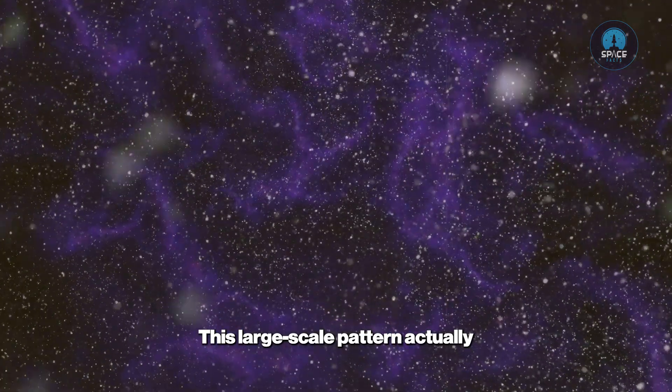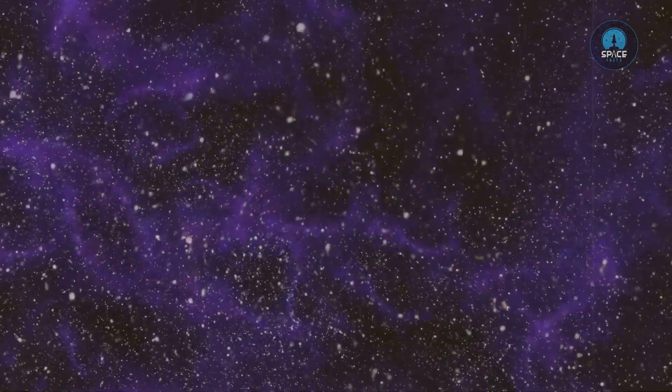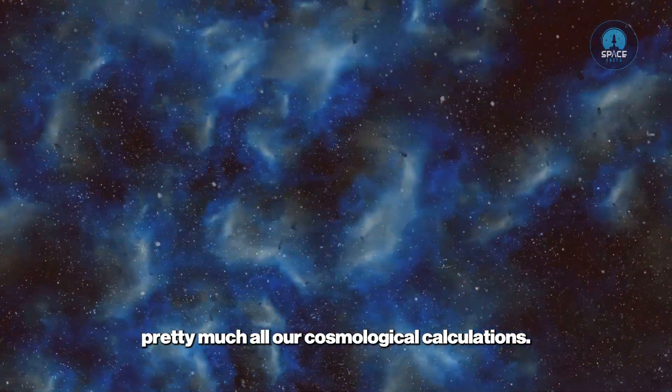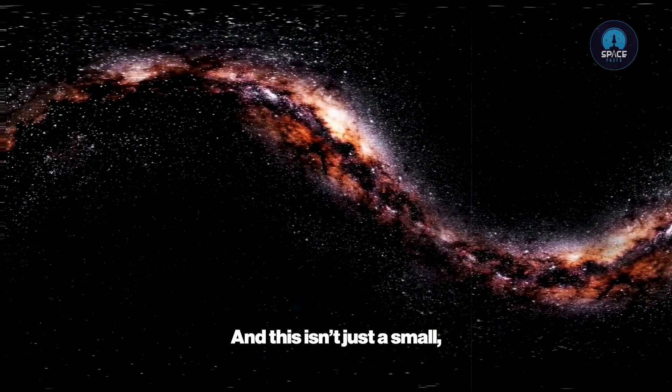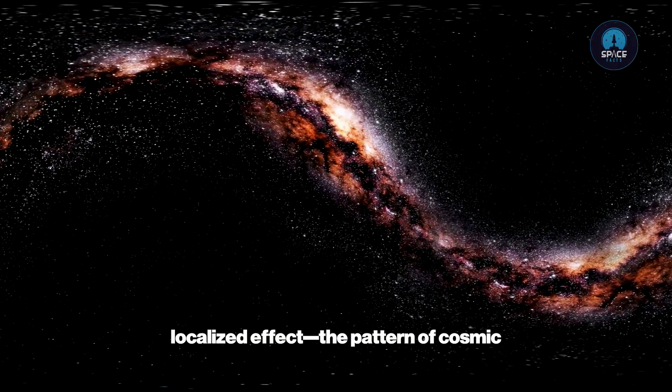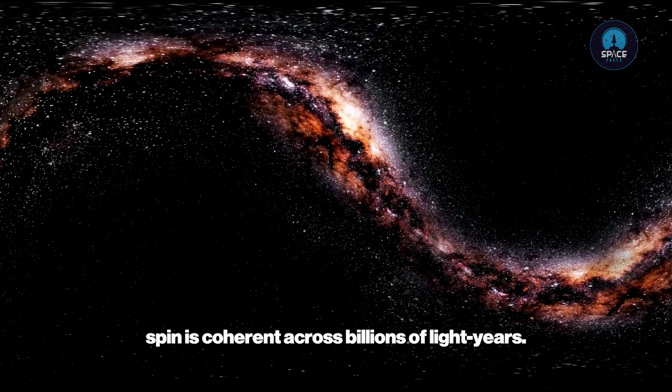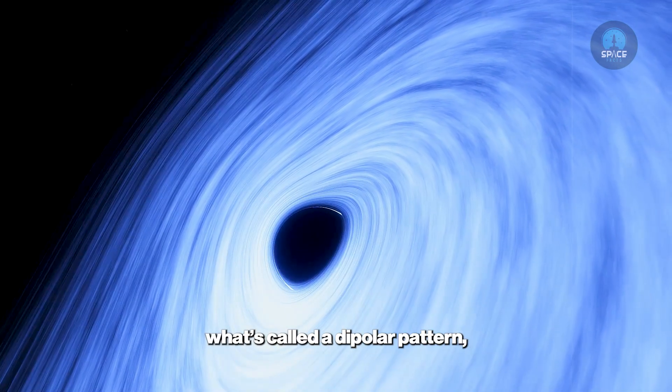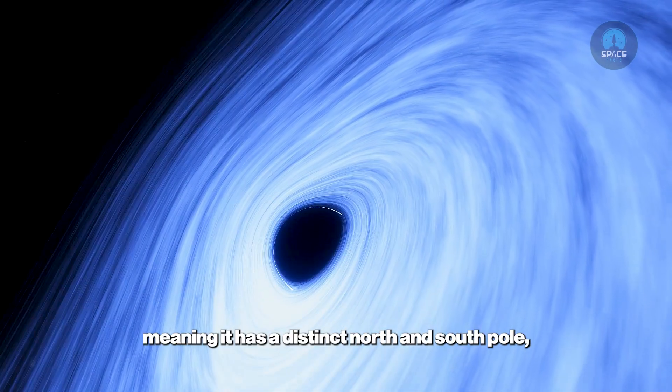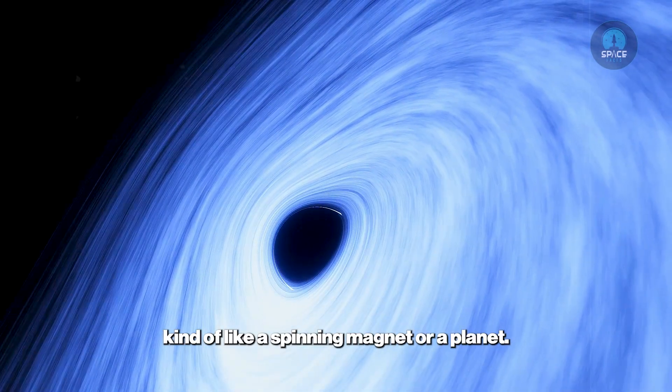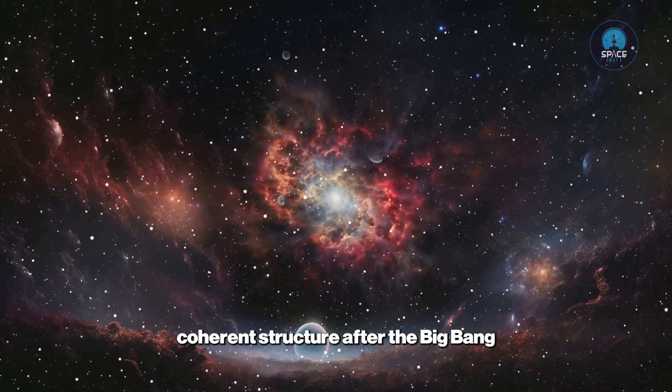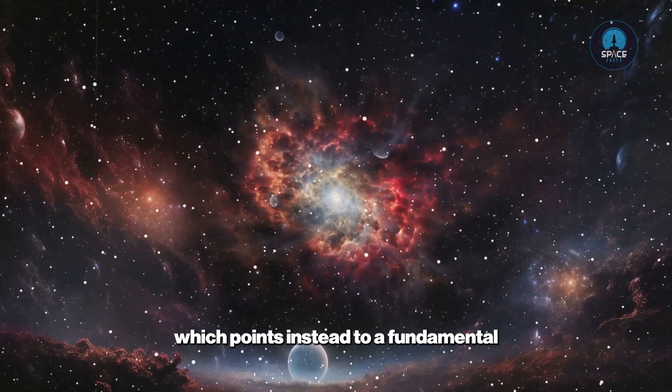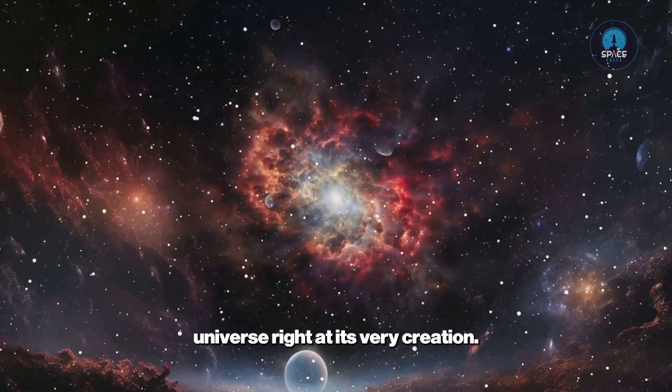This large-scale pattern actually challenges the long-held assumption that the universe is the same in all directions, which is a principle that underpins pretty much all our cosmological calculations. And this isn't just a small localized effect. The pattern of cosmic spin is coherent across billions of light years. Shamir's analysis shows that the distribution of spin directions fits what's called a dipolar pattern, meaning it has a distinct north and south pole, kind of like a spinning magnet or a planet. Creating such a large-scale coherent structure after the Big Bang would be extremely difficult, which points instead to a fundamental property that was imprinted on the universe right at its very creation.